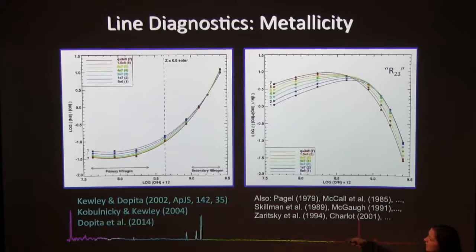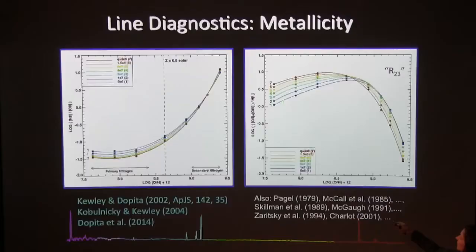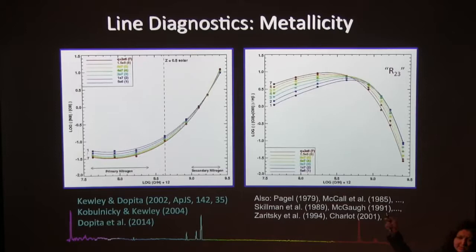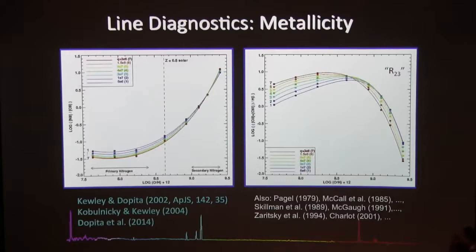At the same time, the oxygen-2 line is sensitive to the electron temperature of the gas, so oxygen-2 drops while nitrogen-2 increases. The R23 diagnostic — lots of people use this at high redshift — is not great because it's double-valued with metallicity. Here the oxygen lines are just increasing with metallicity, but the electron temperature falls so fast that cooling is done by fine structure lines in the infrared, and you get much less collisional excitation of the oxygen lines. In the past, we were able to derive these properties per galaxy.